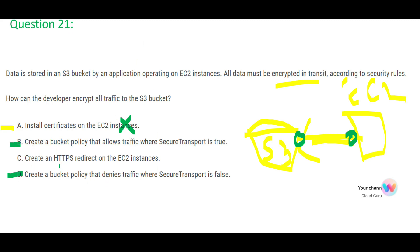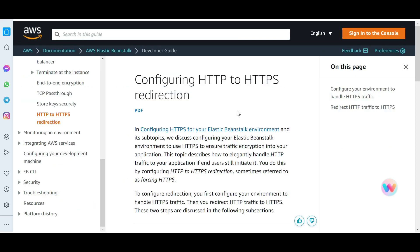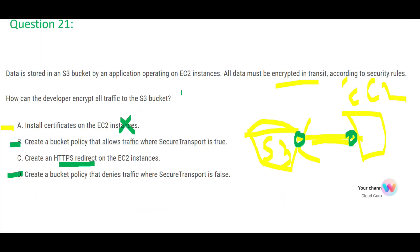Let's look at option C. It talks about an HTTPS redirect. A redirect can only be done by load balancers or Elastic Beanstalk. Do you see load balancers or Elastic Beanstalk mentioned in the question? No. So we have to strike this out as well.